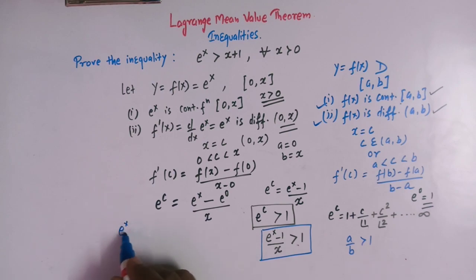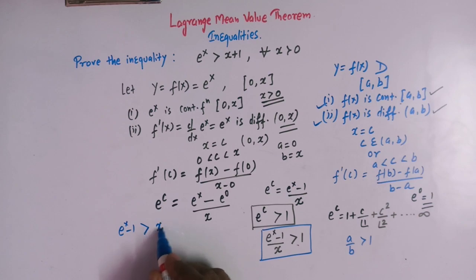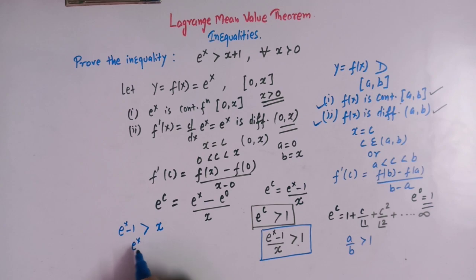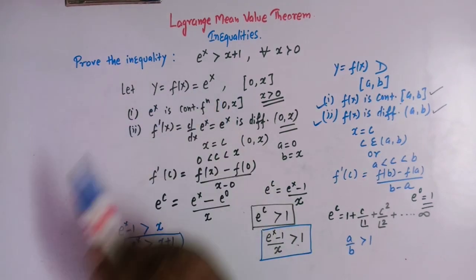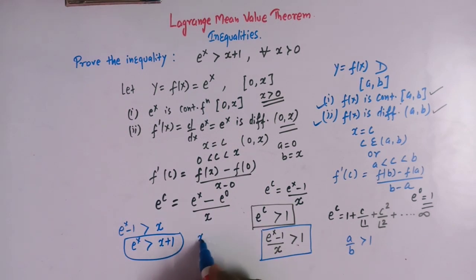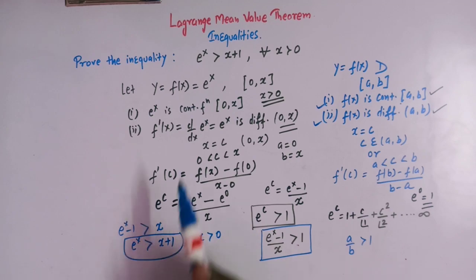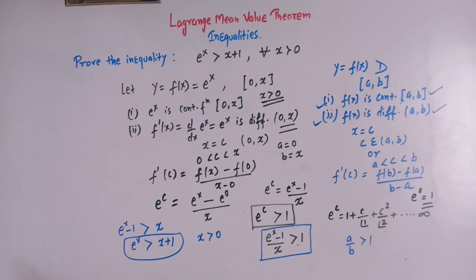Multiplying both sides by x gives us: e raised to x minus 1 is greater than x. Taking the negative 1 to the other side, we get e raised to x is greater than x plus 1, which is our desired inequality, valid for all x greater than 0. This is how, by making use of the famous Lagrange's mean value theorem, we can derive these types of important inequalities.